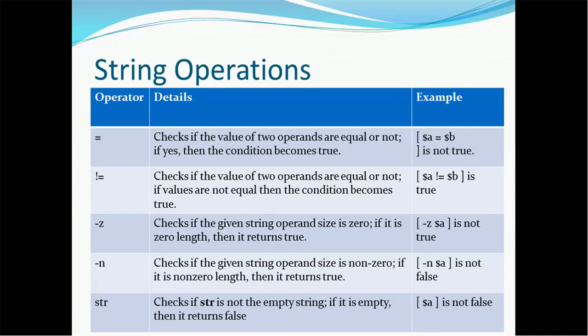Hyphen-z checks if the given string operand's size is zero. If the length is zero then it returns true, so this operator can be used to check if the string is empty or not. Hyphen-n checks if the given string operand's size is non-zero — if the length is non-zero then it returns true, used to check the length of the string.